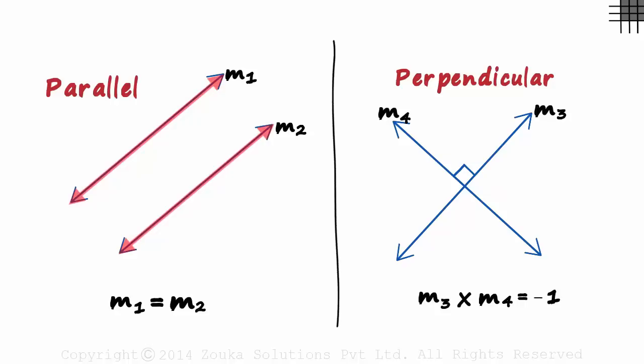If lines are parallel, their slopes are equal. And if they are perpendicular, then the product of their slopes is minus 1.